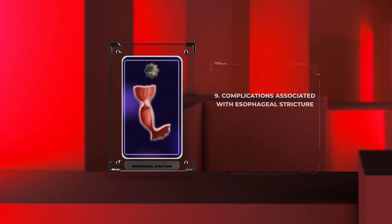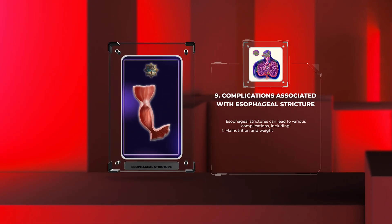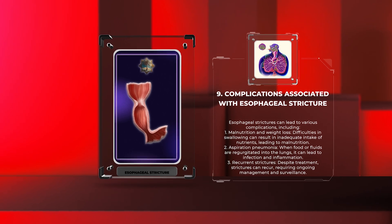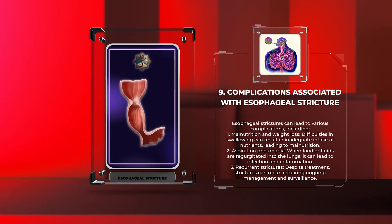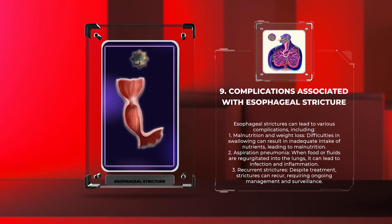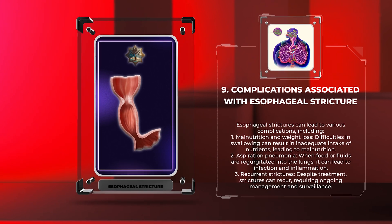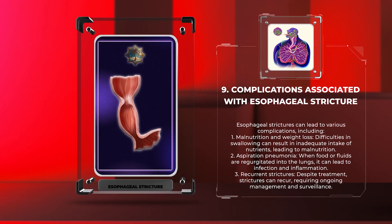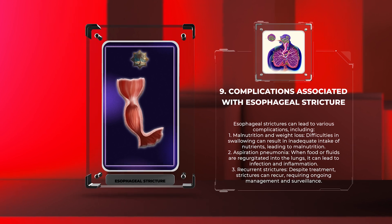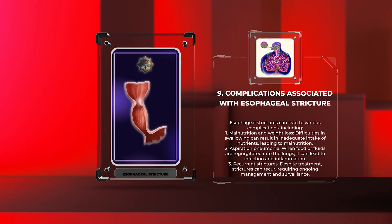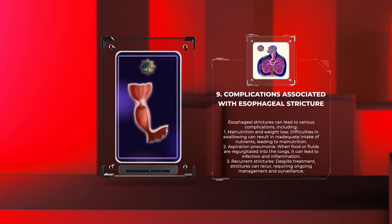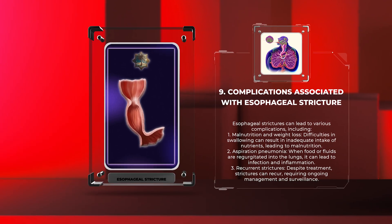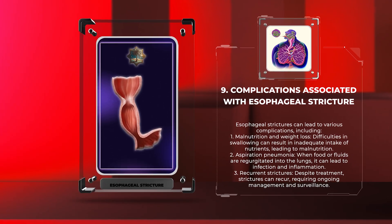Esophageal strictures can lead to various complications, including: 1. Malnutrition and weight loss — difficulties in swallowing can result in inadequate intake of nutrients, leading to malnutrition. 2. Aspiration pneumonia — when food or fluids are regurgitated into the lungs, it can lead to infection and inflammation. 3. Recurrent strictures — despite treatment, strictures can recur, requiring ongoing management and surveillance.